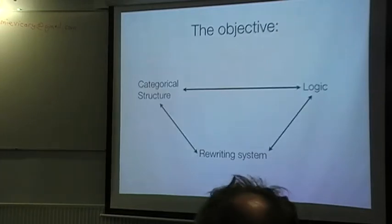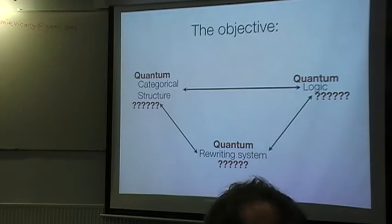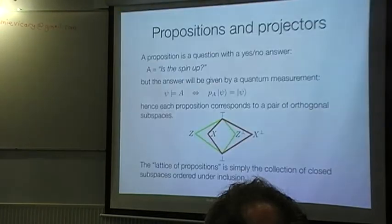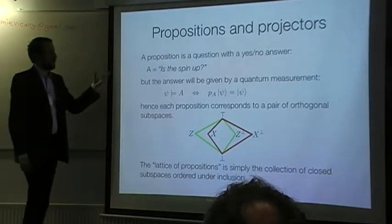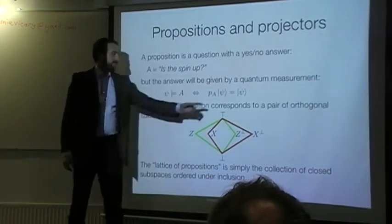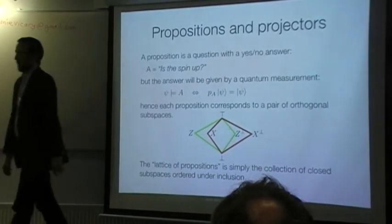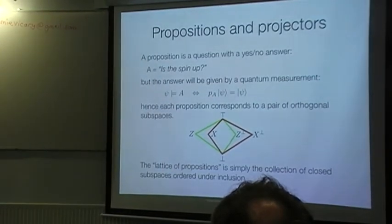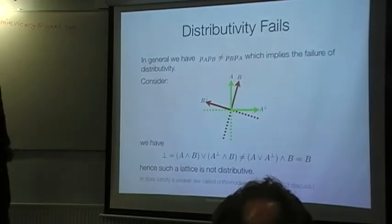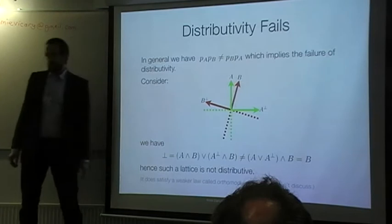So the objective then is to write the word quantum all over this picture. And since I have written the word quantum logic, I'm going to have a quick think about these guys. They were worked on by Birkhoff and von Neumann doing quantum logic. The idea being that a proposition is a yes-no question which would be answered by a quantum measurement. So the state models this proposition if that state is in the subspace corresponding to the projector. And so you have a lattice of propositions. But unfortunately it's not distributive because in general the projectors don't commute.